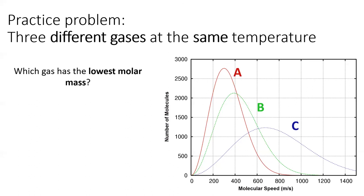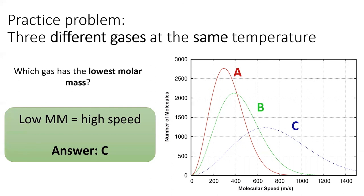Let's use the same graph, but this time, suppose each of these lines represents a different gas, and all the gases are at the same temperature. Which gas has the lowest molar mass? Since these gases are at the same temperature, they all have the same kinetic energy. In order to have the same kinetic energy, light gases must move faster than heavy gases. So the gas with the lowest molar mass will be the fastest, which is gas number C.